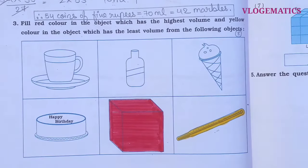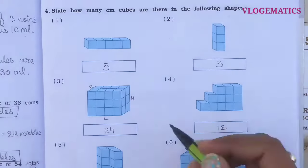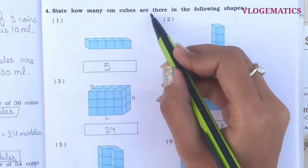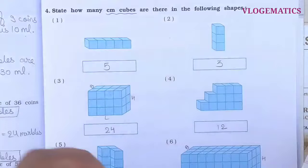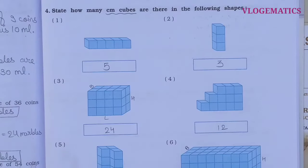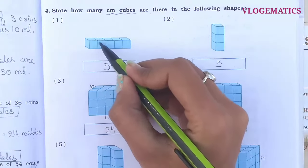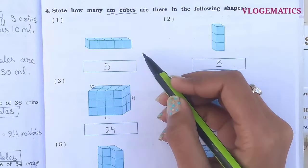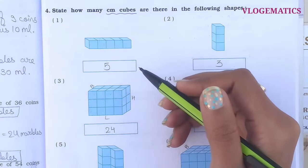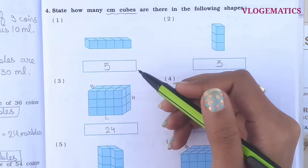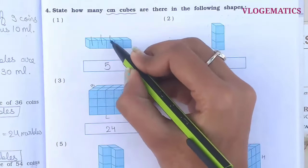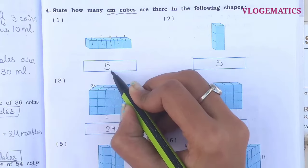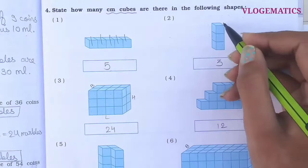Now question number four: state how many centimeter cubes are there in the following shapes. Here we have given shapes showing how many centimeter cubes. Each small box has sides of one centimeter. For shape 1, we can clearly see the cubes: 1, 2, 3, 4, 5 — so here are five centimeter cubes. For shape 2, we can see 1, 2, 3 — here are 3 cm cubes.